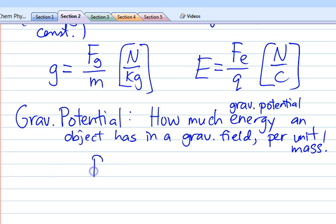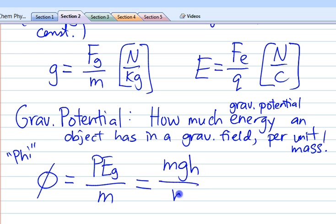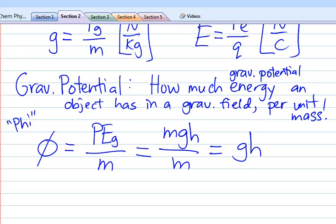And what it is, is basically a description of how much gravitational potential energy an object has in a gravitational field per unit mass. And that's the important part. So what it is, is a ratio of gravitational potential energy per unit mass.